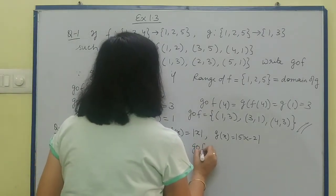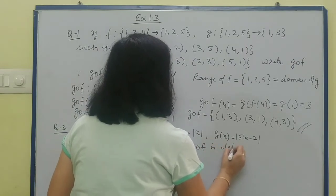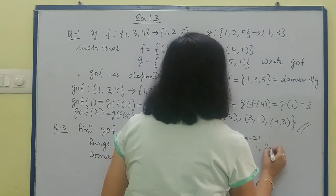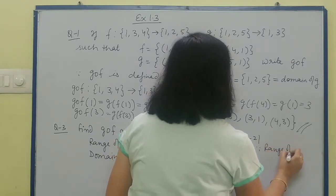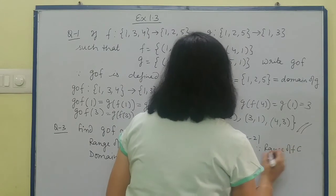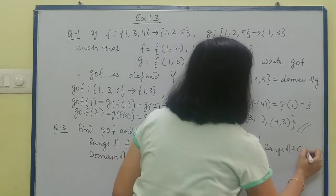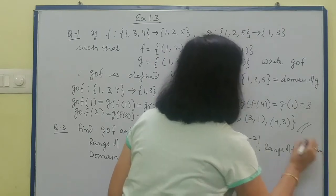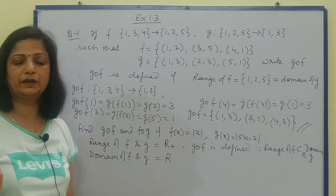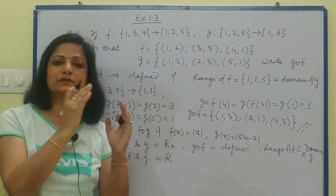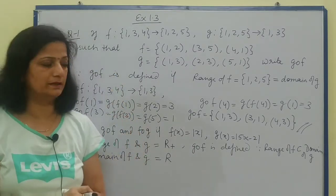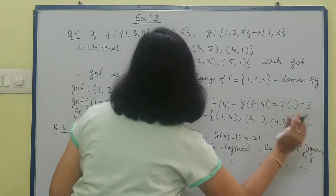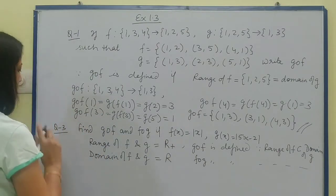So if I say gof is defined, then what should we write here? Since range of f is subset of domain of g, obviously domain of g is the complete set of real numbers, and positive real numbers are a subset of the complete set. Similarly, fog is also defined with the same condition.